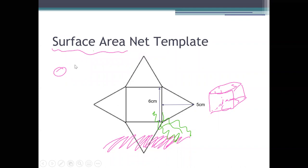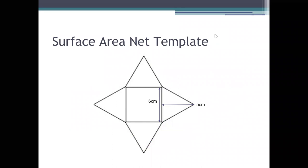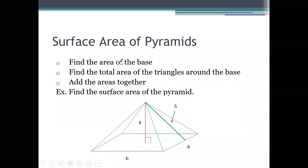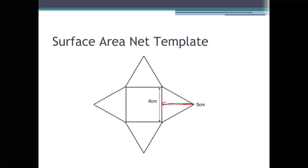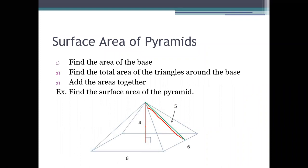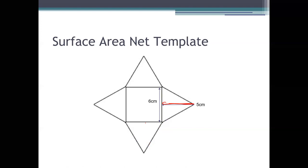This just shows you what the net of the actual solid looks like. The reason I want to include the net is so you have an idea of where all the different components are. If we go back to our picture, we can see that the five is coming from the height of the actual triangle itself. The six is the actual base. You might notice there's no label for the four — that's because the four is the height of the whole pyramid, not the height of the triangle. You probably looked at nets in grade seven and eight, so this is just another option to help visualize what a three-dimensional solid looks like in two dimensions.